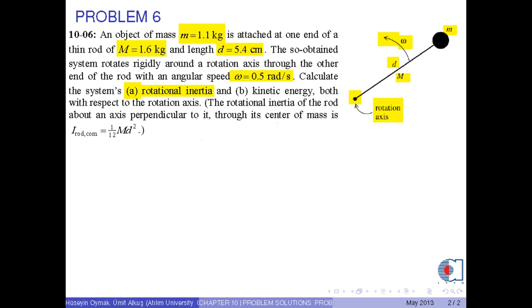Calculate the system's rotational inertia and kinetic energy both with respect to the rotation axis. The rotational inertia of the rod about an axis perpendicular to it through its center of mass is I sub rod com equals 1 over 12 times capital M times d squared.